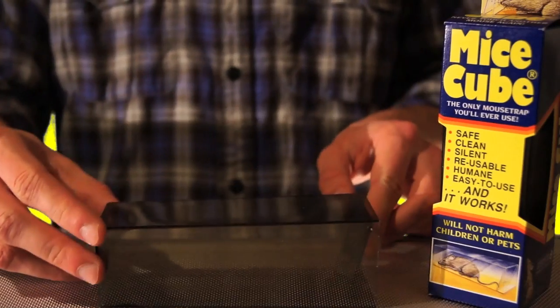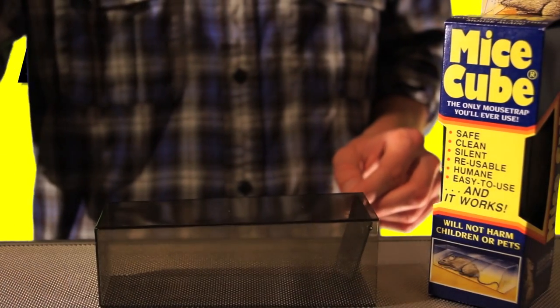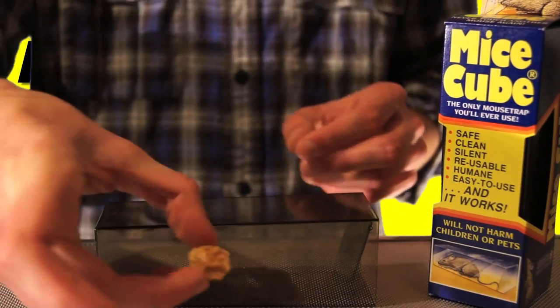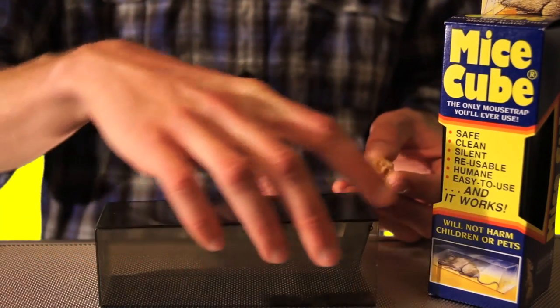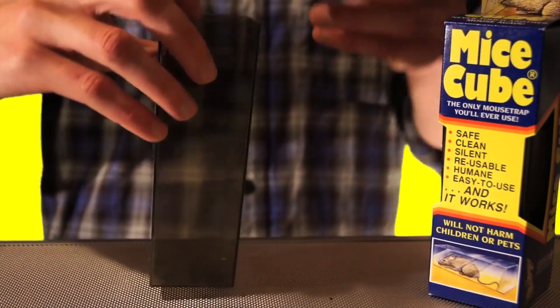So the way you bait it is you just take a little piece of tortilla chip, or I've got a piece of cereal here with some peanut butter on it, and you just drop that down inside. And there, it's baited.